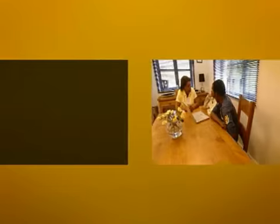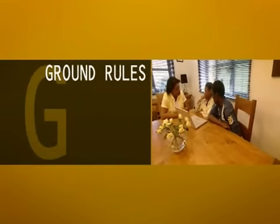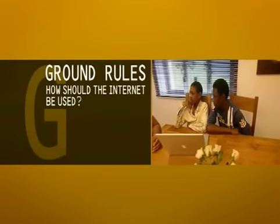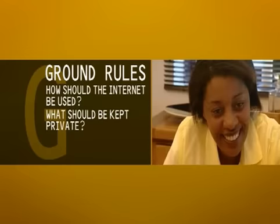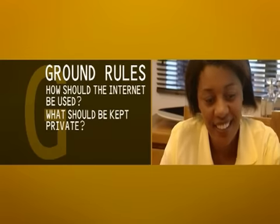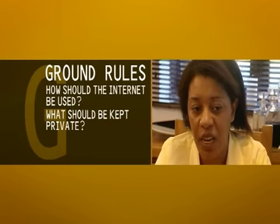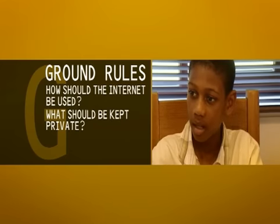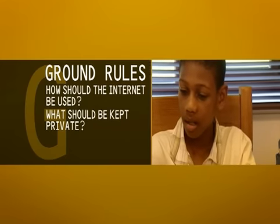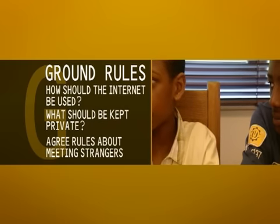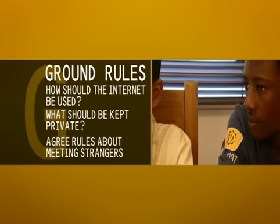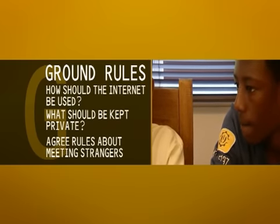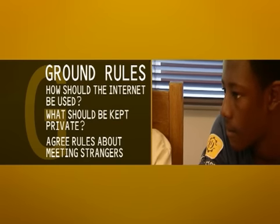G is for ground rules. Agree with your children how the Internet is going to be used, and what information should always be kept private. Make your children think about whether they'd be happy for certain information to be published or given to a stranger. Most importantly, agree the rules about meeting strangers that they've encountered on the Internet. If something's not acceptable in real life, it shouldn't be acceptable on the Internet.